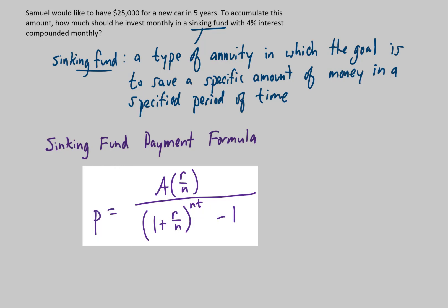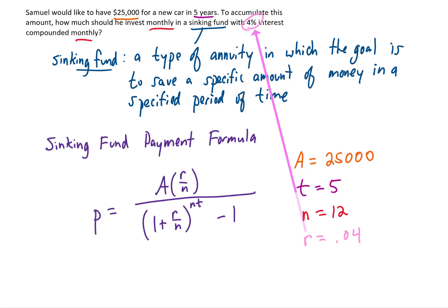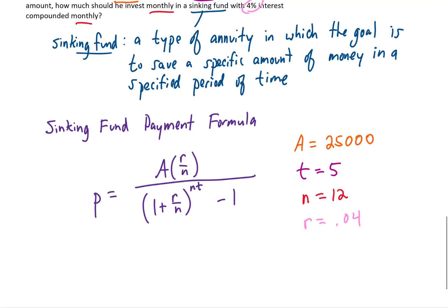So if we would like to have $25,000 saved, that means that the amount in the account, we want to be $25,000. If we want that savings to happen in five years, that means our T equals five years. We're investing money monthly into this account. So our N value is going to be 12. And finally, if we have a 4% interest rate, that means our R is 0.04. So we're going to take all of those numbers and plug them into this formula.